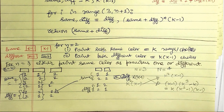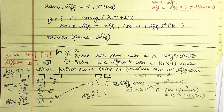Let's verify for n=3: same becomes the diff from n=2, which is k*(k-1). The new diff is k + k*(k-1) = k^2 - k + k = k^2. So the total same + diff = k*(k-1) + k^2 = k^3 - k.